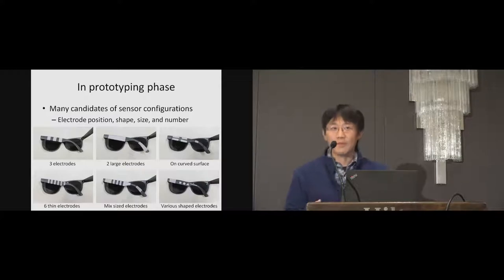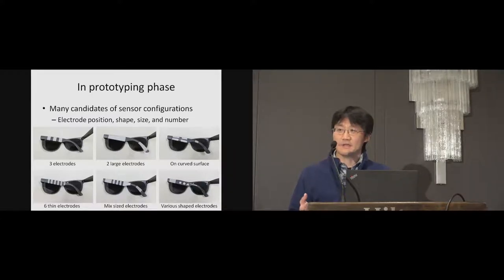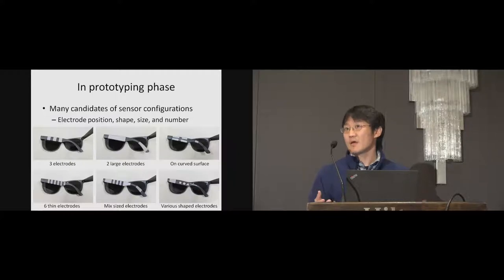This is an example. A maker wants to embed touch sensing capability on eyeglasses like Google Glass. There are many candidates - electrode position, shape, size, and the number of electrodes are different. The optimal electrode configuration depends on what the maker wants to detect, and he will perform trial and error to tune the sensor configuration.